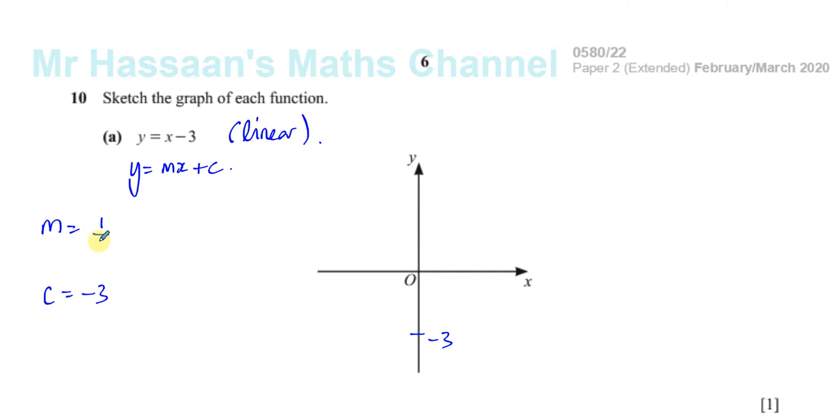Which you can write as a fraction, 1 over 1, which means this is the rise over the run. So for every 1 it goes up, it goes across 1. So it goes an equal number of spaces up as it does go across.